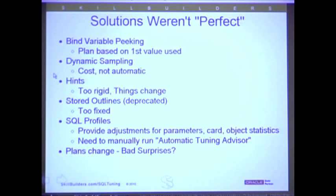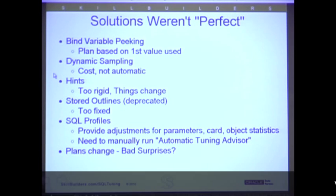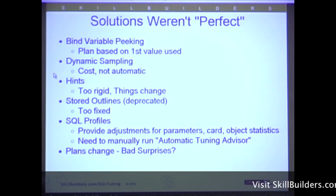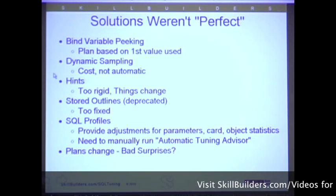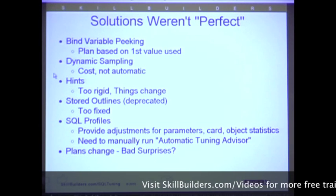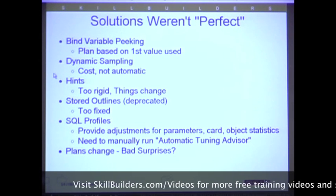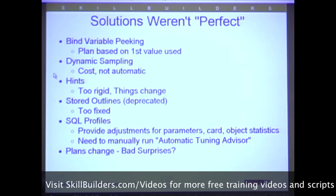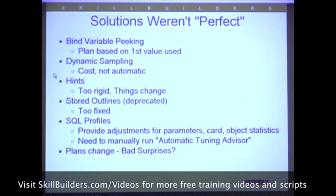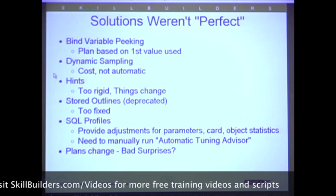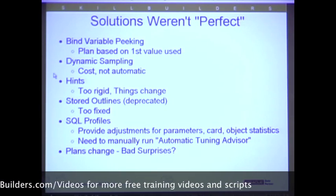Dynamic sampling is a pretty good solution — you can add a hint, dynamic sample level four, and I'll demonstrate that. It's not perfectly accurate, but it's a pretty good solution, except you have to add a hint manually. You've got to alter your session; it's not automatic. So dynamic sampling is not perfect. Certainly, hints to force a plan — there is a hint for selectivity, which I'll show you — but these are not great solutions. We know all the problems with hints: we have to change the code.